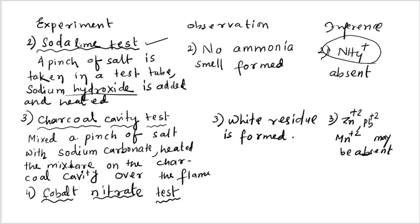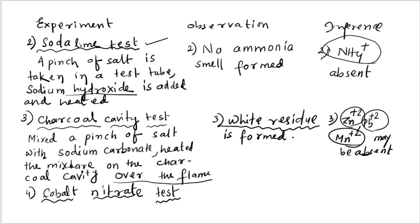Since ammonium salt is absent, we proceed to the charcoal cavity test. In the charcoal cavity test, you make a cavity on charcoal, mix sodium carbonate with the salt, and heat strongly using an oxidizing flame. A white residue is found in the cavity, which means Zn²⁺, Pb²⁺, and Mn²⁺ are absent. The result indicates Ca²⁺, Ba²⁺, or Sr²⁺ may be present.